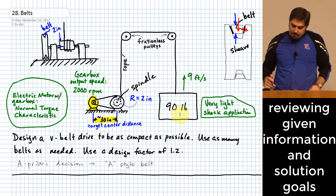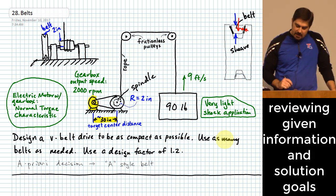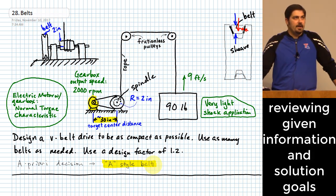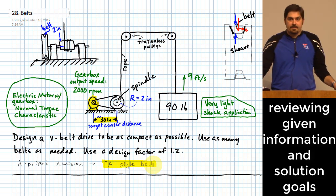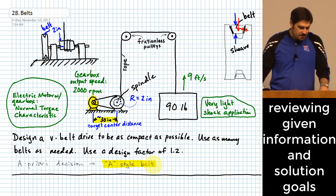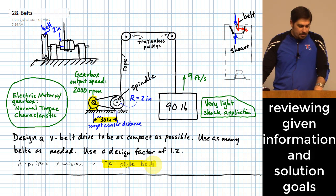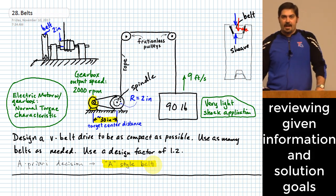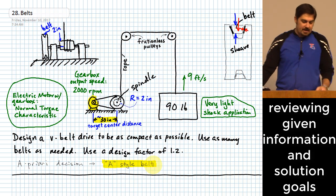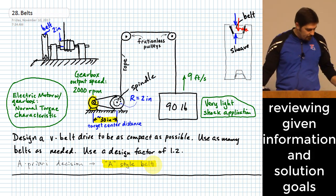We'll make one a priori decision: we're going to try to do this with an A-style belt. These are different sizes of belts, and A is essentially the smallest one we have data for. Table 17-9 gives guidelines on horsepower transmission — about a quarter horsepower up to about 10 horsepower is what you can expect out of an A-style belt.